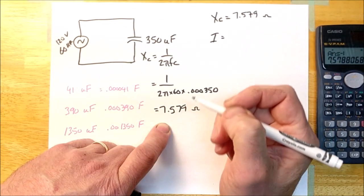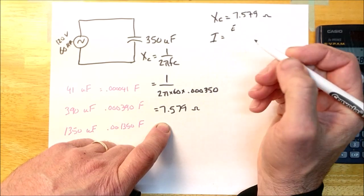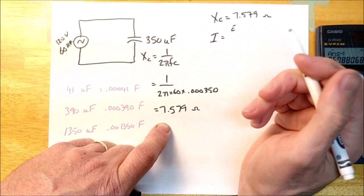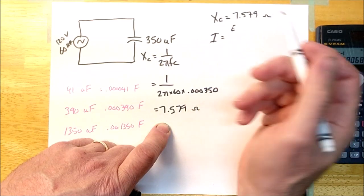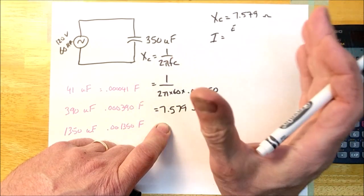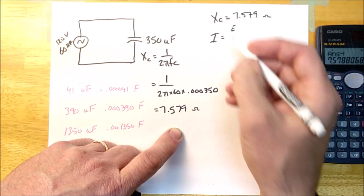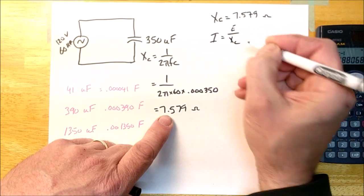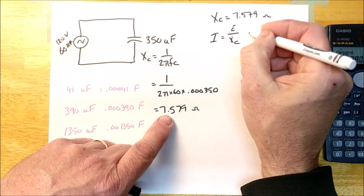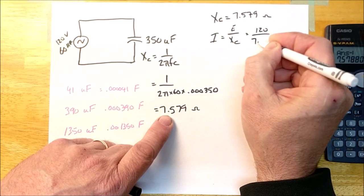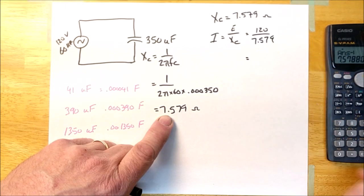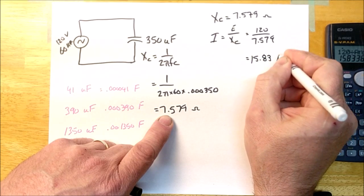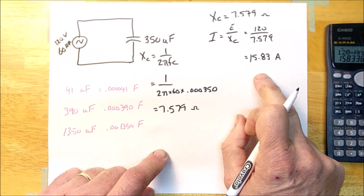And now I can calculate the current in this circuit. I is going to be E... I is always the voltage divided by whatever it is in the circuit that's limiting current. If it's a resistor, then it's R. If it's an inductor, it's XL. If it's a capacitor, it's XC. If it's all three or a combination of them, it'll be Z, because Z is going to be the sum of all the things in the circuit that limit current. Since I only have a capacitor in there, I'm going to go E over XC. And so it is 120 over 7.579. 15.83 amps flowing in this circuit.